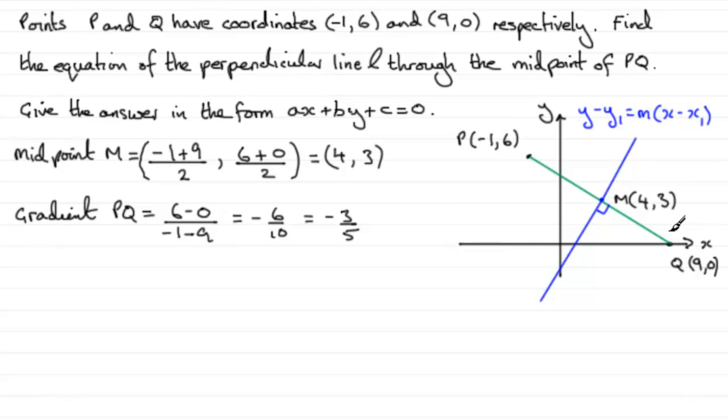Just experiment yourself. You can always start with this Y value, 0 minus 6 divided by 9 minus minus 1. You should find you still get minus 3 fifths. So we've got the gradient of PQ.